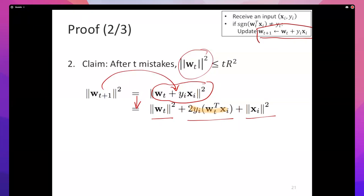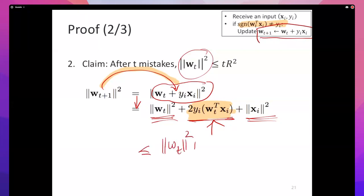The middle term 2·yᵢ·w_t^T xᵢ: the only time we make this update is when the sign of w^T xᵢ and the sign of yᵢ are opposite, which means this product is negative. So ‖w_{t+1}‖² ≤ ‖w_t‖² + ‖xᵢ‖². And yᵢ is ±1, so yᵢ² = 1, giving ‖w_{t+1}‖² ≤ ‖w_t‖² + ‖xᵢ‖².